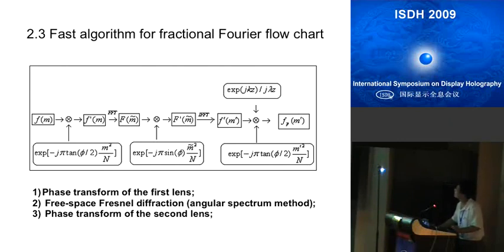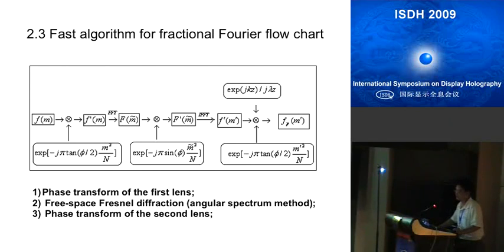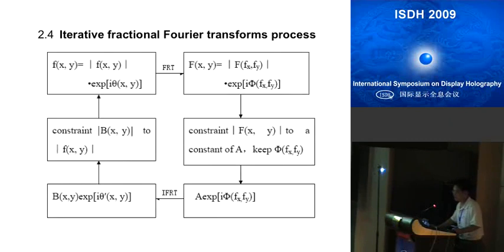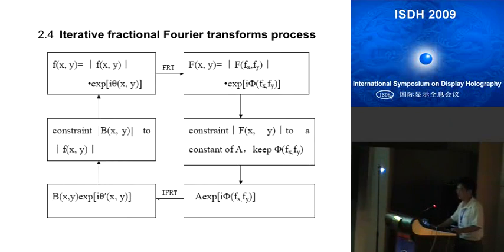In this flow chart, M denotes the object plane, this M denotes the Fourier plane, and this M denotes the fractional Fourier transform plane. This fast algorithm is based on the FFT. We use the fast fractional Fourier transform to iterate with the phase of the original wave. This is the iterative fractional Fourier transform process, similar to the traditional iterative Fourier transform process. The difference is that here we use the fractional Fourier transform, not the FFT.